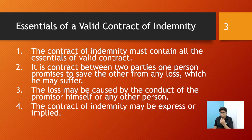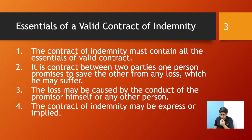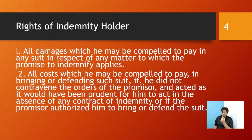Now, what are the essentials of a valid contract of indemnity? It must contain all the essentials of a valid contract. Additionally, there must be a promise to indemnify some loss. One party promises to save the other from any loss they may suffer. The loss may be caused by the conduct of the promisor himself or any other person. A contract of indemnity may be expressed — by words spoken or written — or implied by the conduct of the parties.